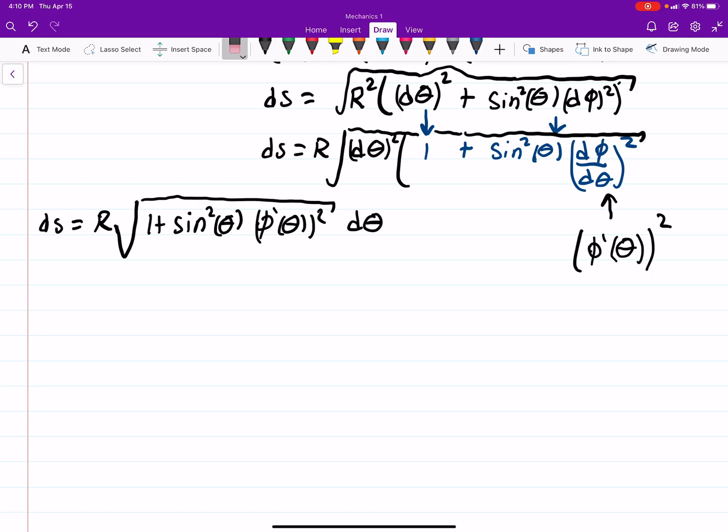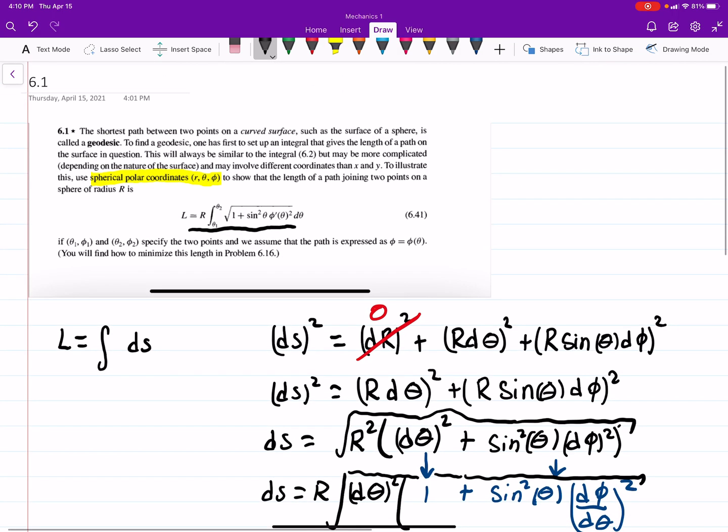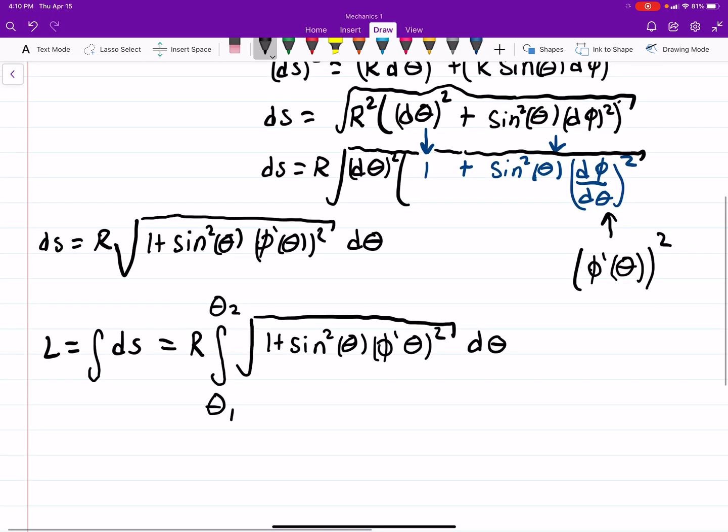And again, l is the integral of ds, so the r is constant. I can factor that outside of the integral. We'll go from theta 1 to theta 2. And then we're left with our 1 plus sine squared theta phi prime of theta squared. And then d theta. And that is exactly what they have there. So that's all you have to do here, so not too bad.